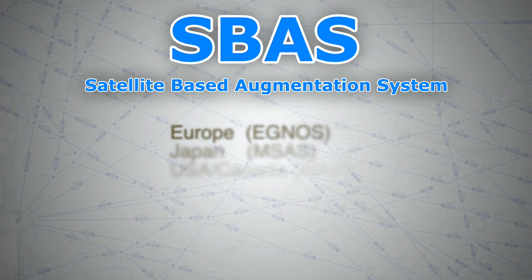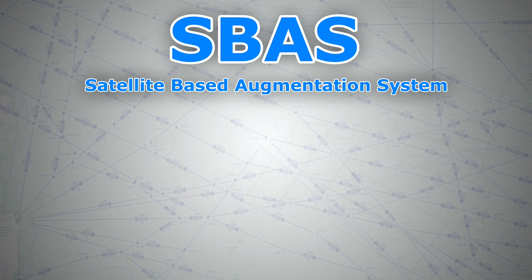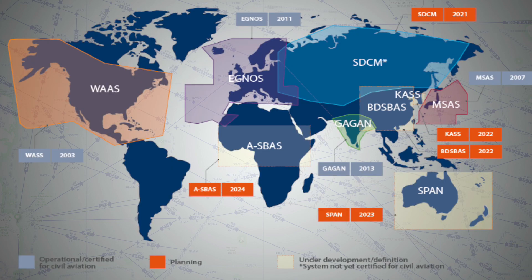Let's look at the types of SBAS available out there. We have the European EGNOS or European Geostationary Navigation Overlay System, the Japanese MSAS or Multifunctional Satellite Augmentation System, the American WAAS or Wide Area Augmentation System, and so on. This diagram will help you visualize every area and its corresponding SBAS system.